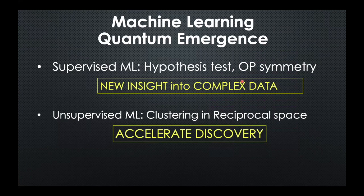In conclusion, I've talked about using various machine learning tools to learn quantum emergence from large-volume or complex data. I talked about using supervised machine learning for hypothesis testing and discussed the theoretical candidate for the nature of the order parameter, giving us new insight into complex data. I also talked about unsupervised machine learning — a clustering approach that can handle large volumes of data to accelerate discovery. Thank you for your attention.